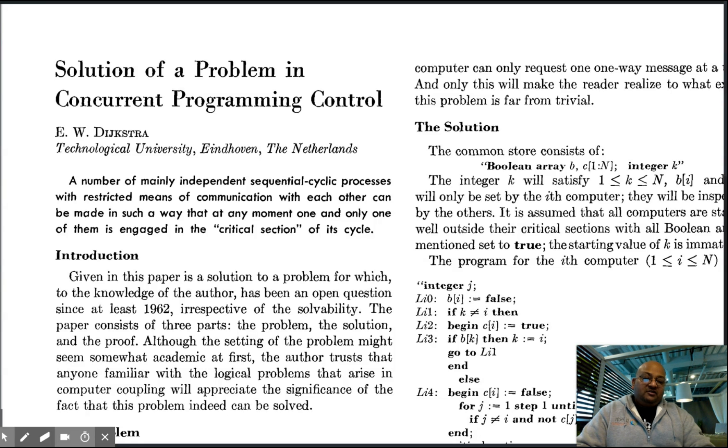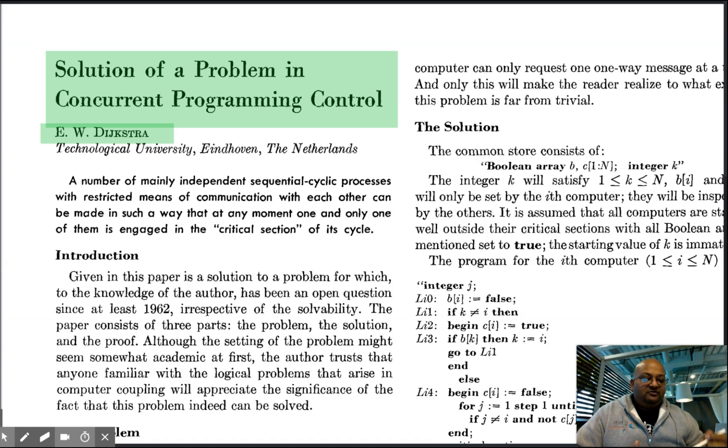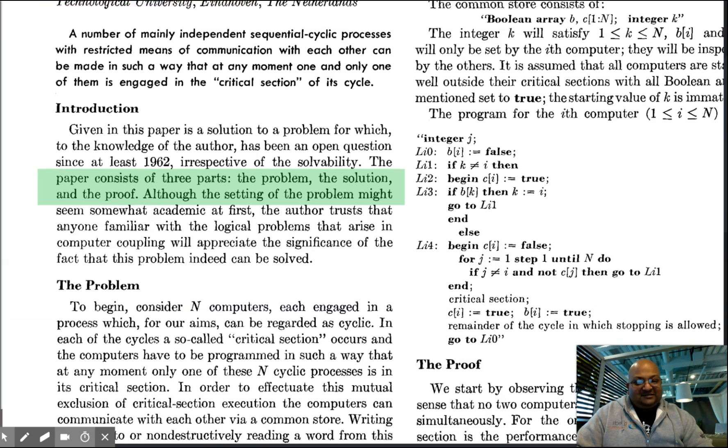Hi folks, so today we're going to look at a paper by Dijkstra. This came out in 1965 and it basically kicked off the entire field of distributed computing. It looks at the solution to the famous mutual exclusion problem in distributed computing. Like any good story, this paper has three parts: the problem, the solution, and the proof. So let's look at each of those.